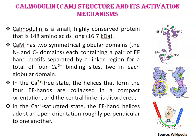Now look at this second diagram showing the structure of calmodulin. In the calcium-free state, no calcium ions are attached, so the helices that form the four EF-hands are collapsed together in a compact orientation, and the central linker is disordered. In the calcium-saturated state, the EF-hand helices adopt an open orientation, roughly perpendicular to one another, with calcium ions attached and calmodulin in an open conformation.